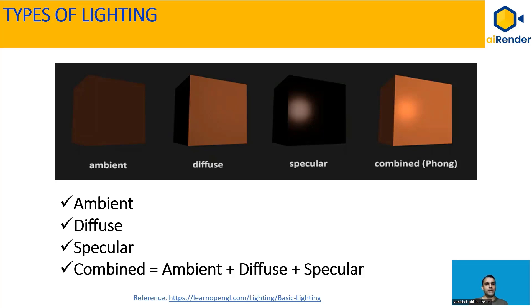Then we have specular lighting. You may have noticed a bright spot on a metallic surface or a glossy object, like a porcelain cup or plate. The reflected light in specular lighting is more towards the actual color of the light than the color of the object. The overall lighting can be expressed as a combined effect of all these types of lighting, and we'll see more about these three types and their combined effect in upcoming sessions.